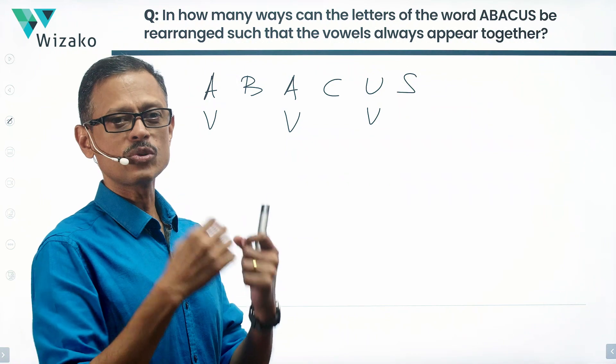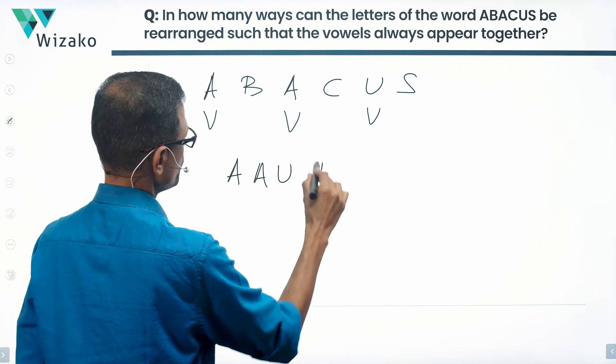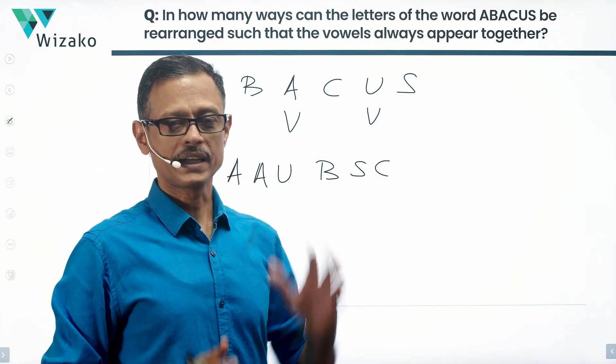A, A, U - the three vowels need to appear together. So something like this would be permitted: A, A, U, B, S, C is an accepted rearrangement for this particular question.